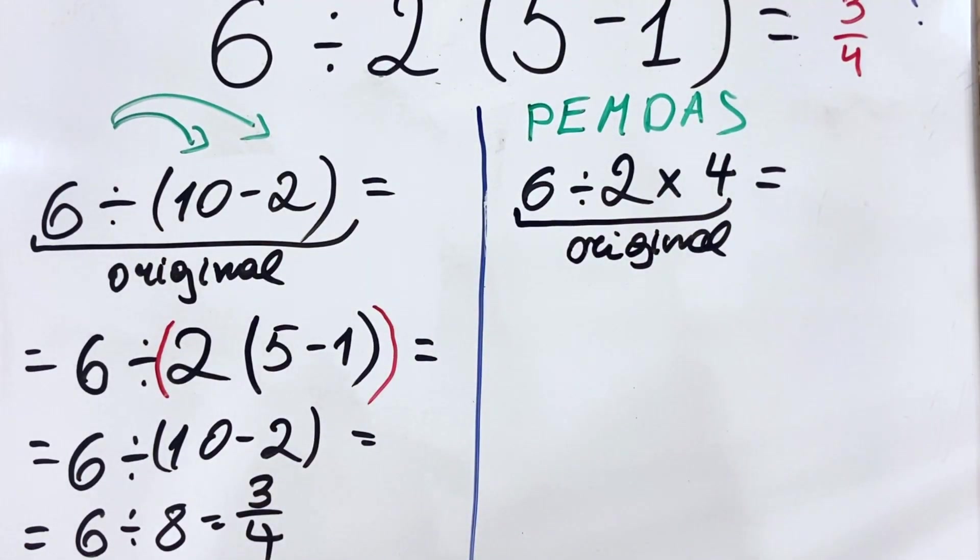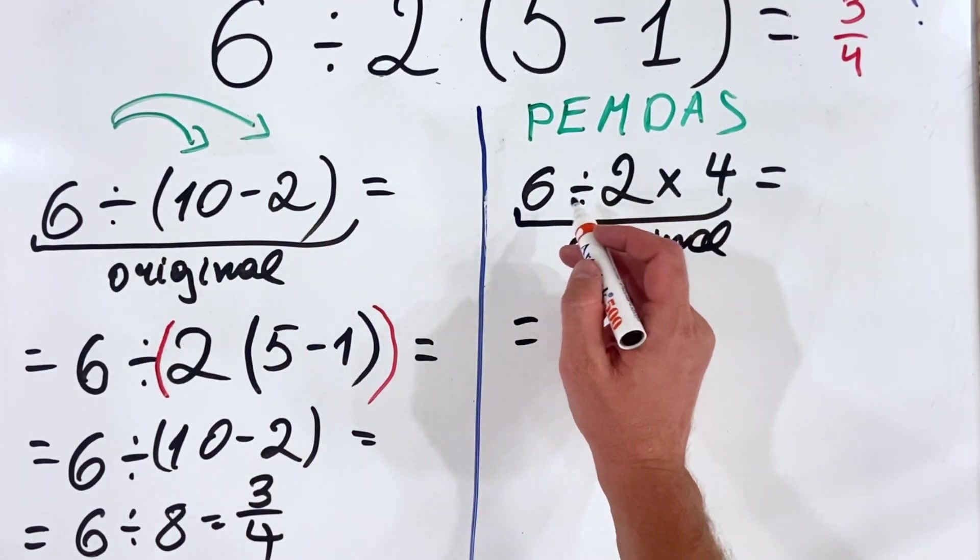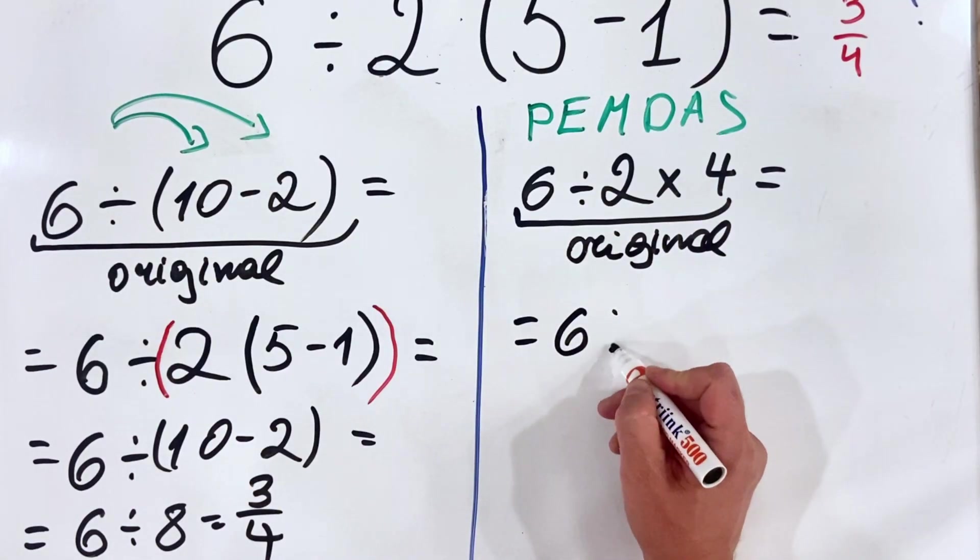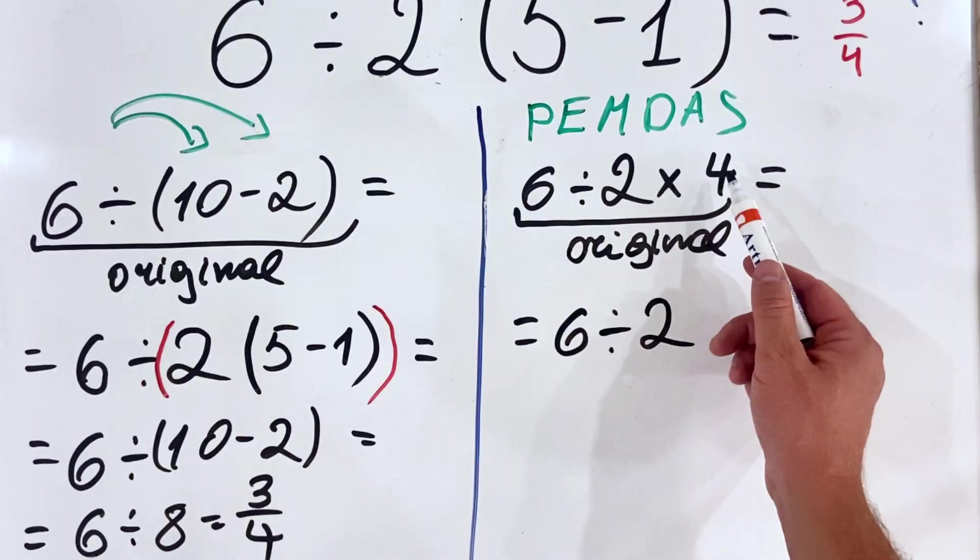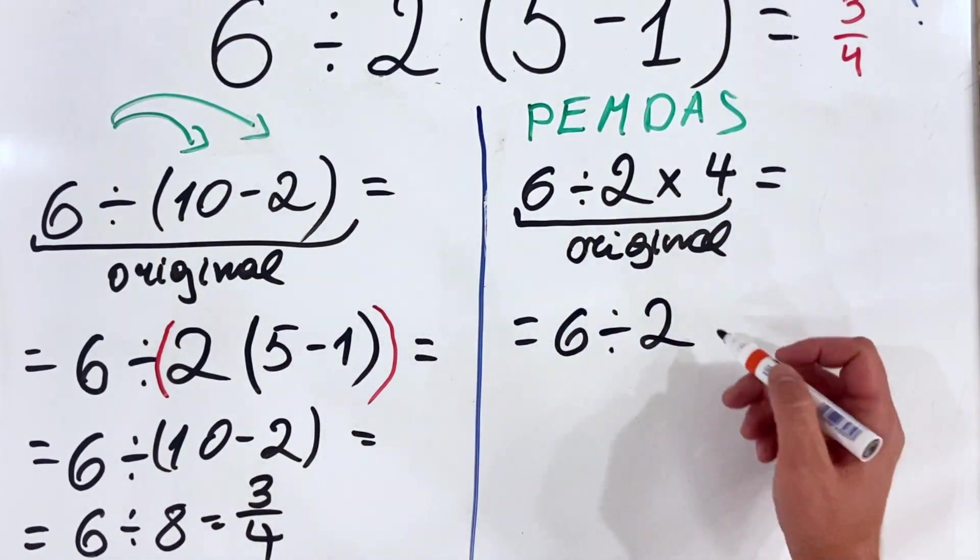How can I write it? I can write 6 divided by 2 and 4, because I want to put it in two terms, in two numbers.